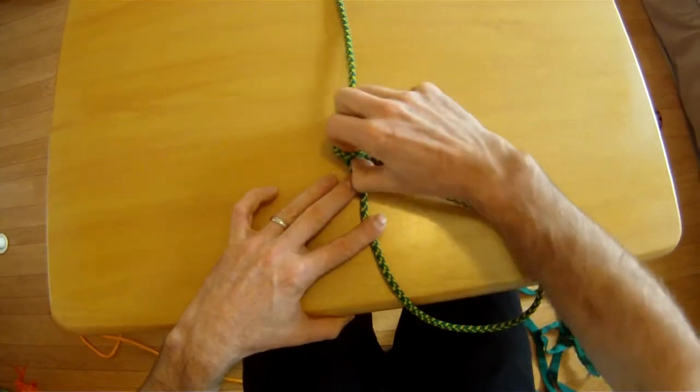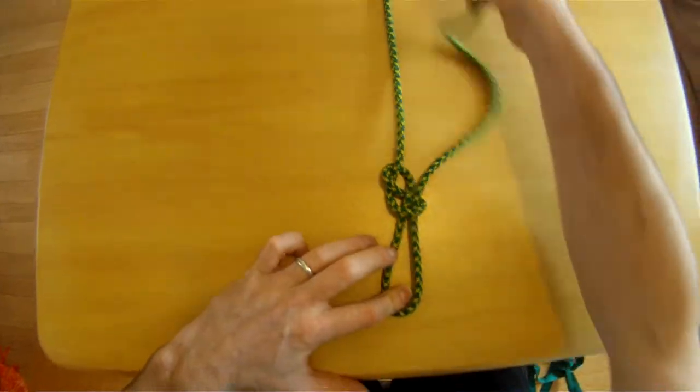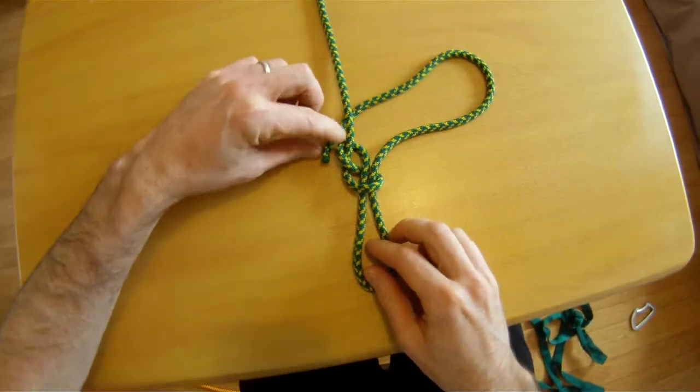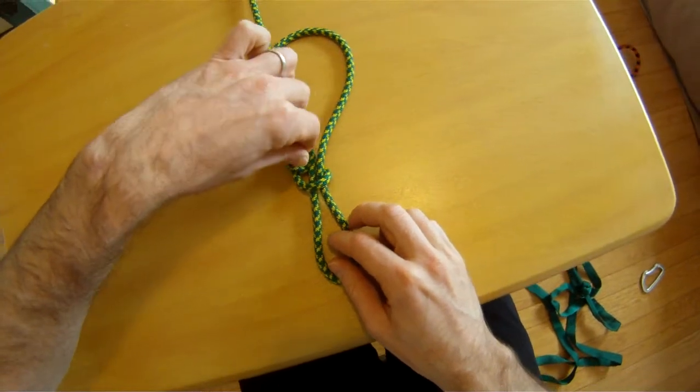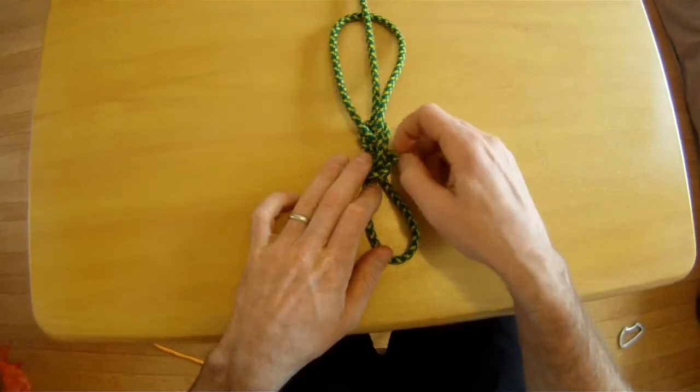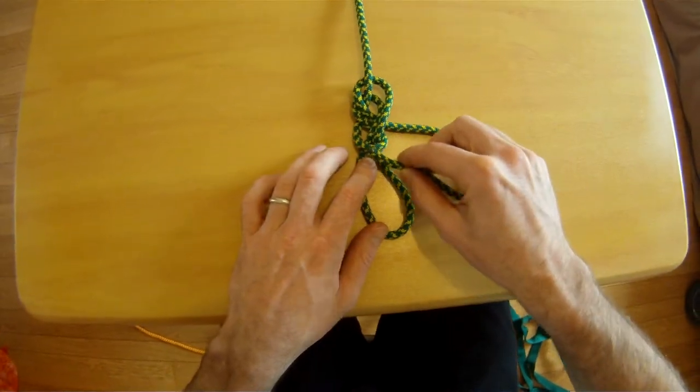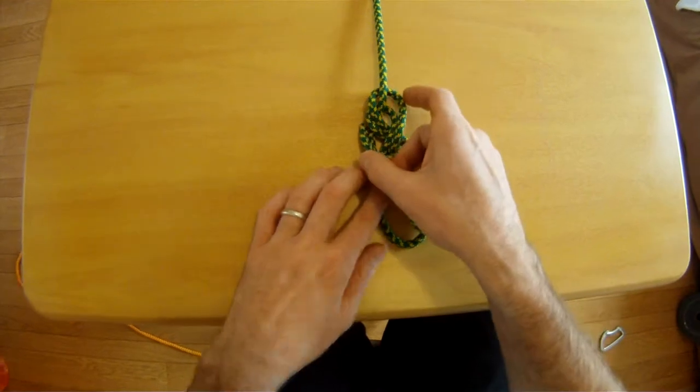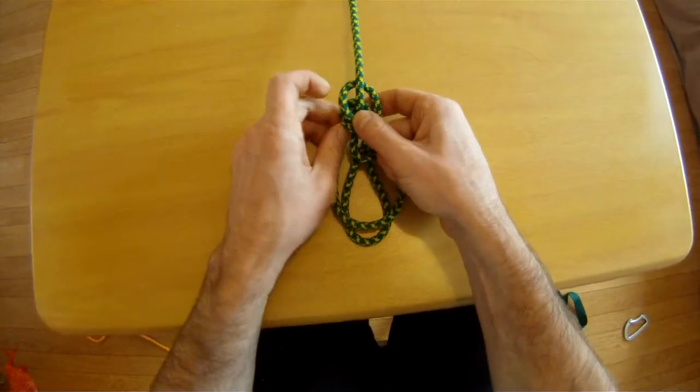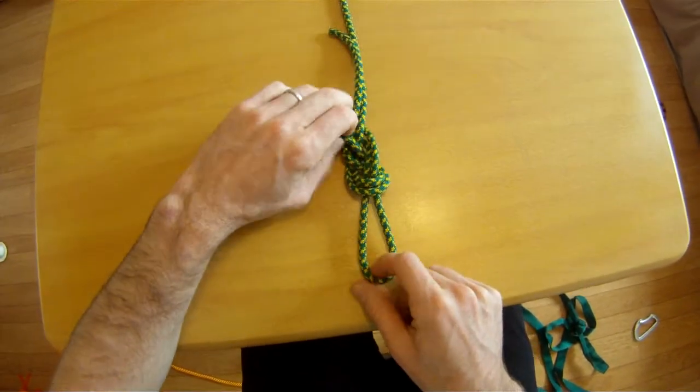So you retrace along the original line, following every bend, every curve, and every follow-through. And finally, the last step, the tail will come out the top of the knot. That is the double figure eight follow-through.